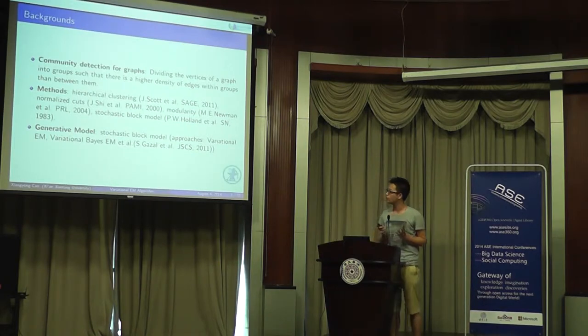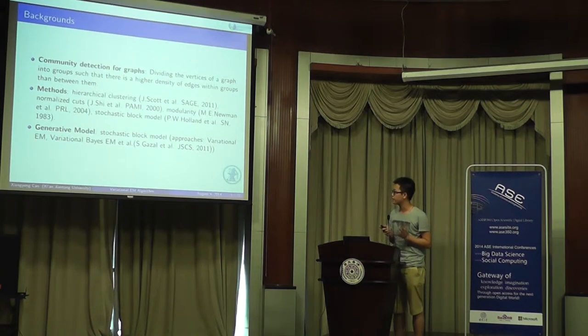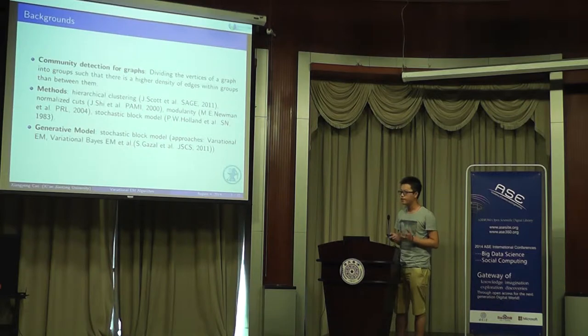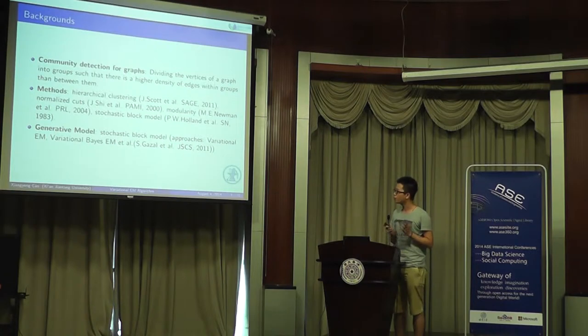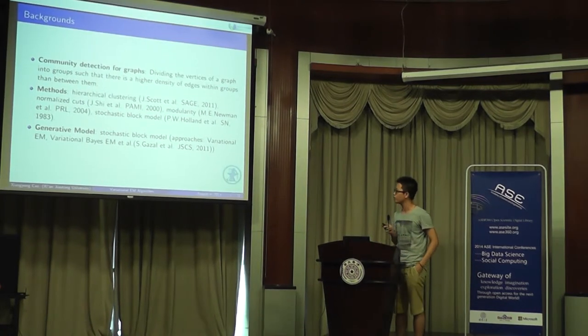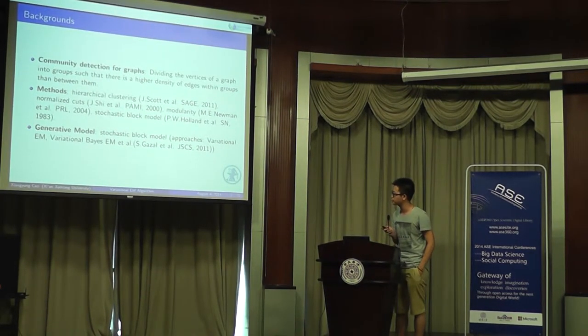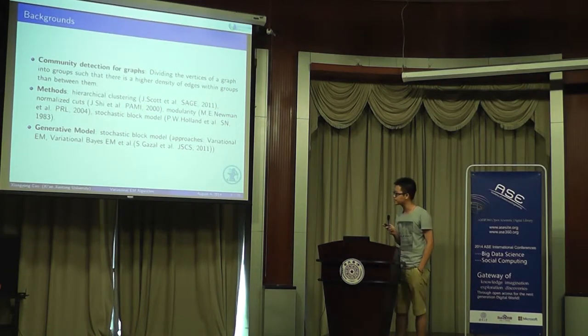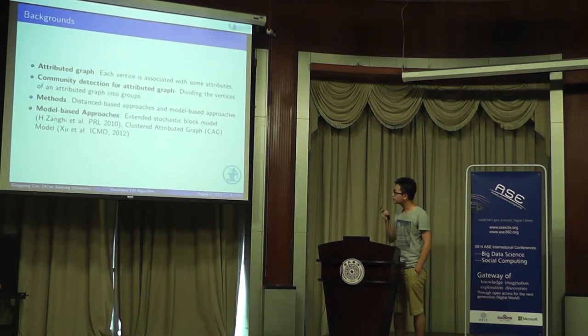The existing methods for Community Detection for Graphs have hierarchical clustering, normalized cuts, modularity, stochastic block model, and so on. Among these methods, only the stochastic block model is a generative model, and we can use a variational method to fit it.